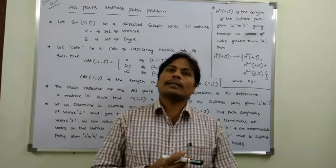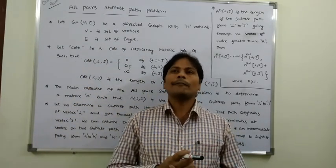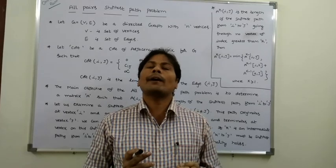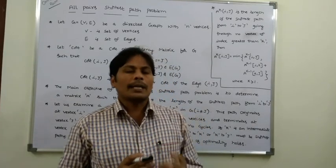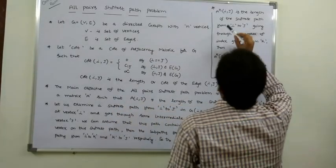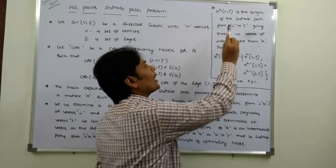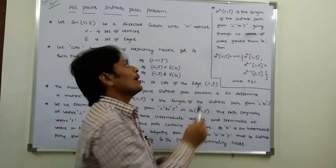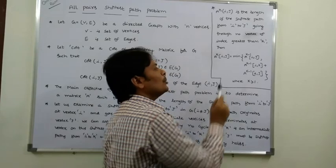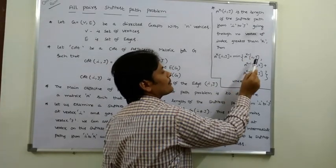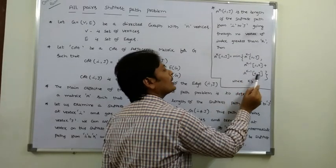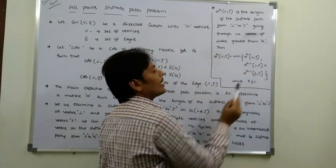After constructing the adjacency matrix, we find the minimum shortest distance between every pair of vertices using the following formula: A^k(i, j) is the length of the shortest path from i to j going through no vertex of index greater than k. Then A^k(i, j) = minimum of A^(k-1)(i, j) and A^(k-1)(i, k) + A^(k-1)(k, j), where k >= 1.